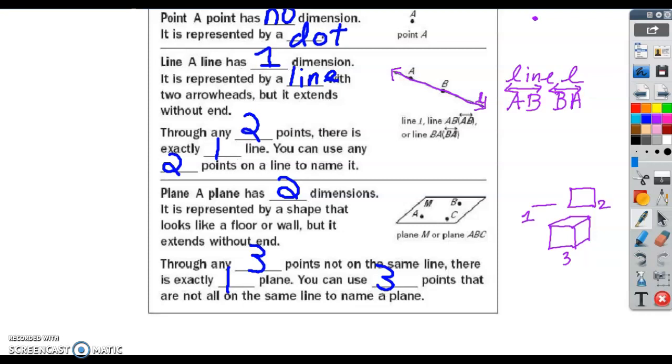A plane is represented by a shape that looks like a floor or a wall, but it extends without end. When you draw a plane, you have to draw boundaries, but a plane doesn't have boundaries. We can name a plane using three points, but the three points can't all be on the same line, because then we'd be naming a line. At least one of the points has to be off of the line.